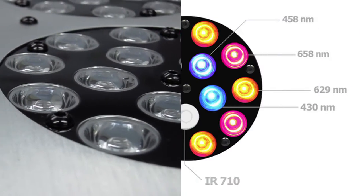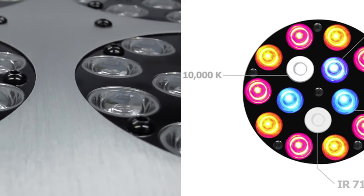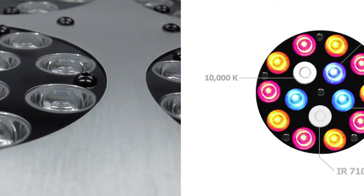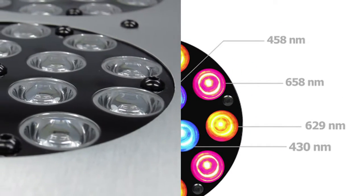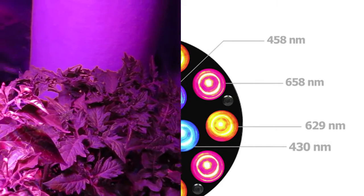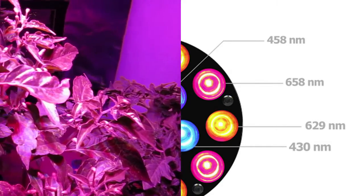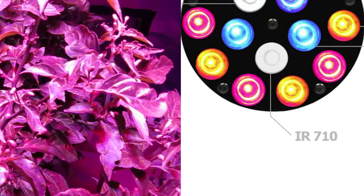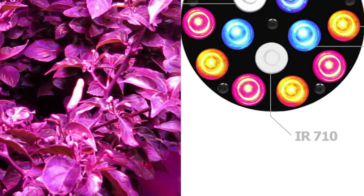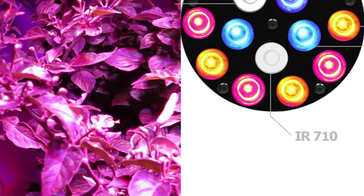The 430 and 460 nanometer blue diodes and the 10,000 Kelvin white diode help promote chlorophyll absorption. The 629 and 658 nanometer red and orange diodes aid in photosynthesis, and they now offer a new 710 infrared diode that helps with resin production without harming your plants.